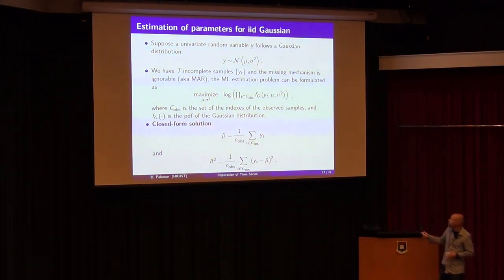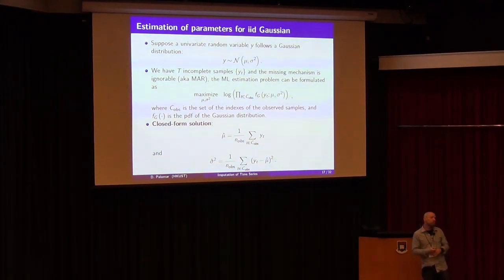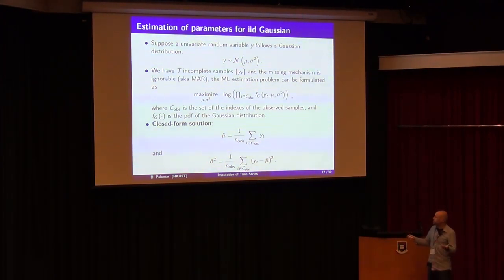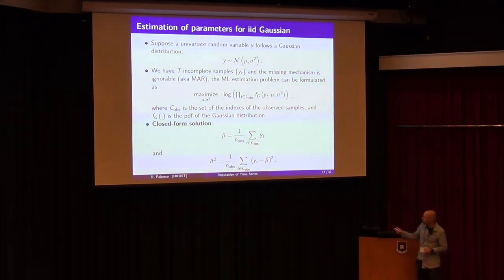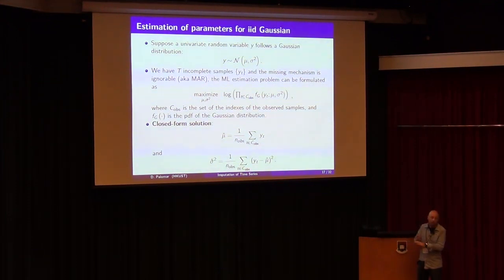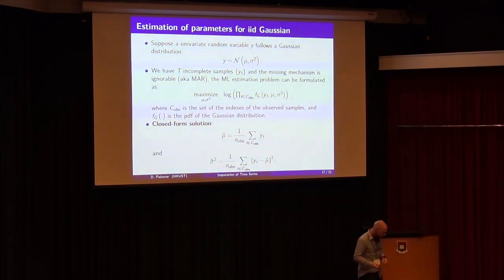Not only that, but this maximization has a nice closed form solution — basically, the sample mean and the sample variance estimator, using only the observed values. That is the Gaussian IID case.